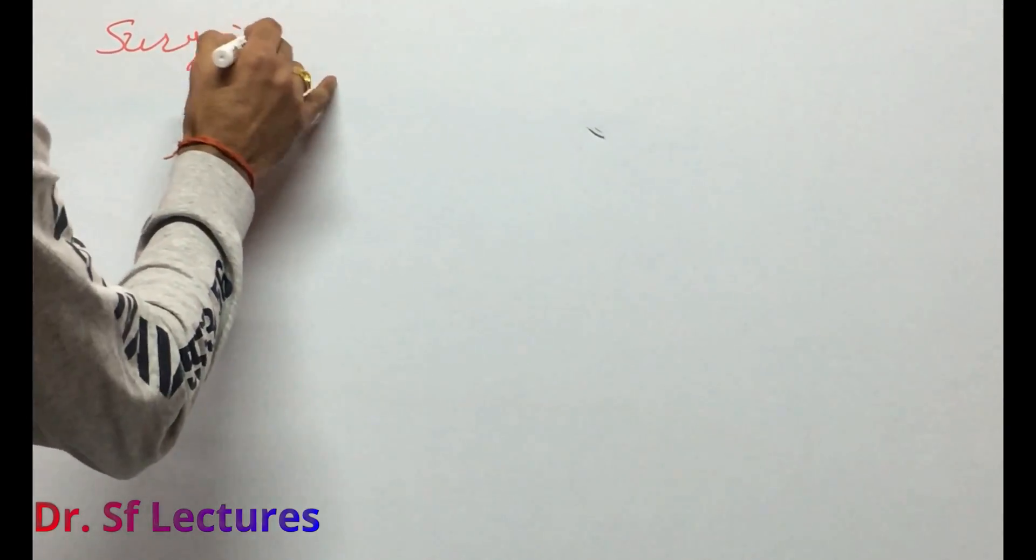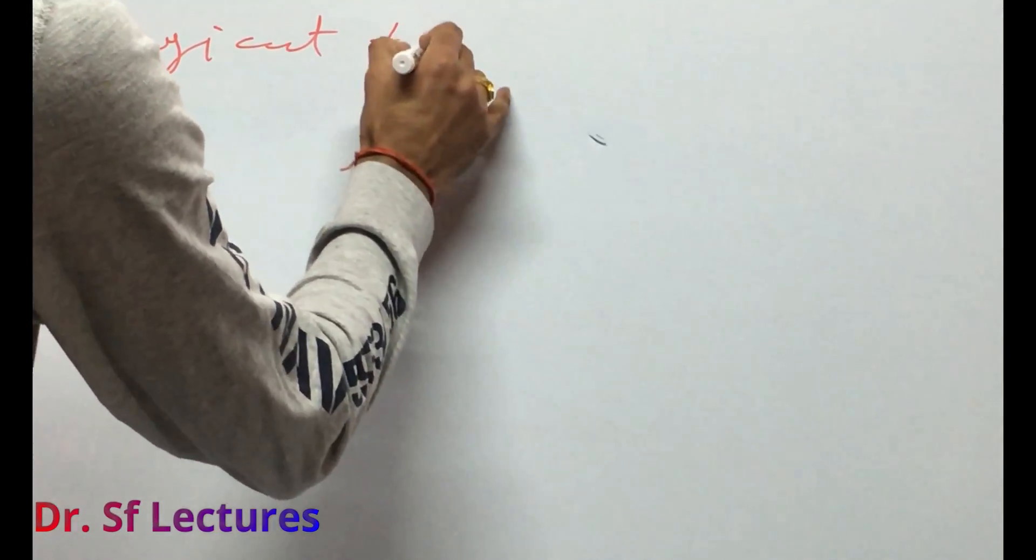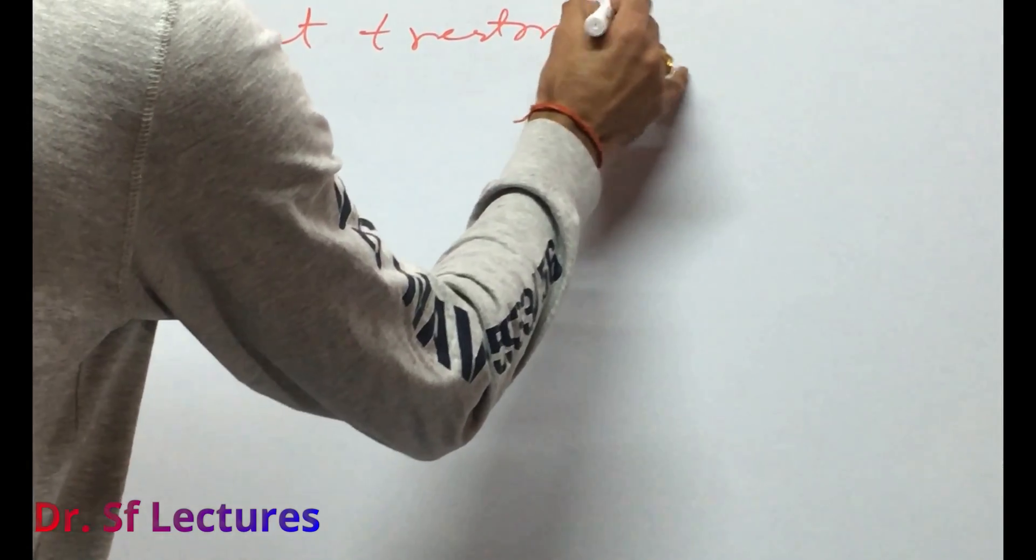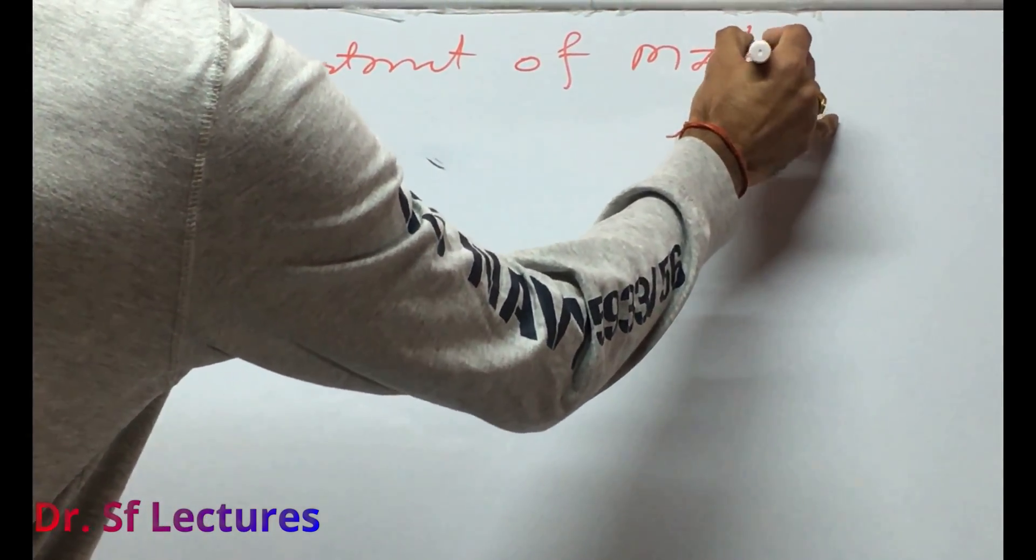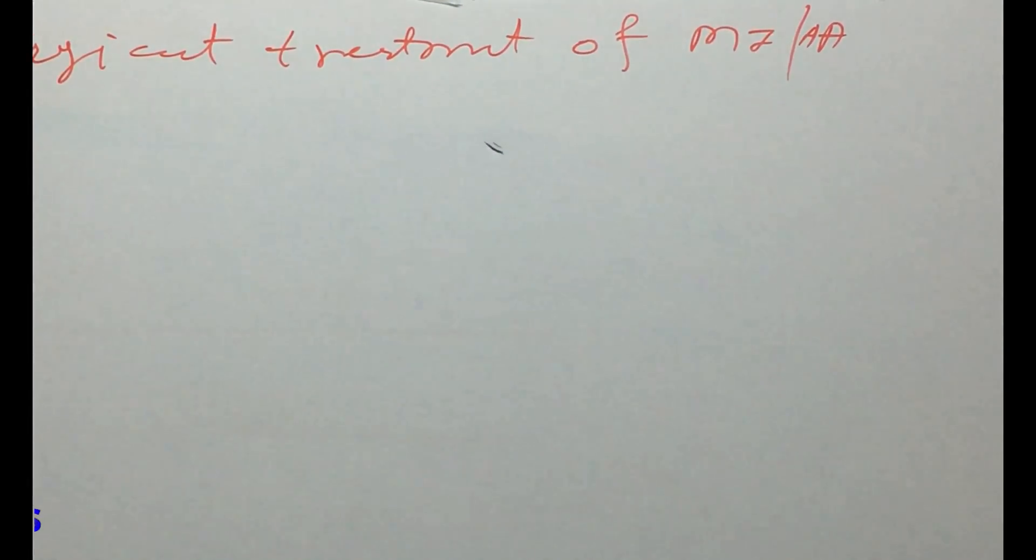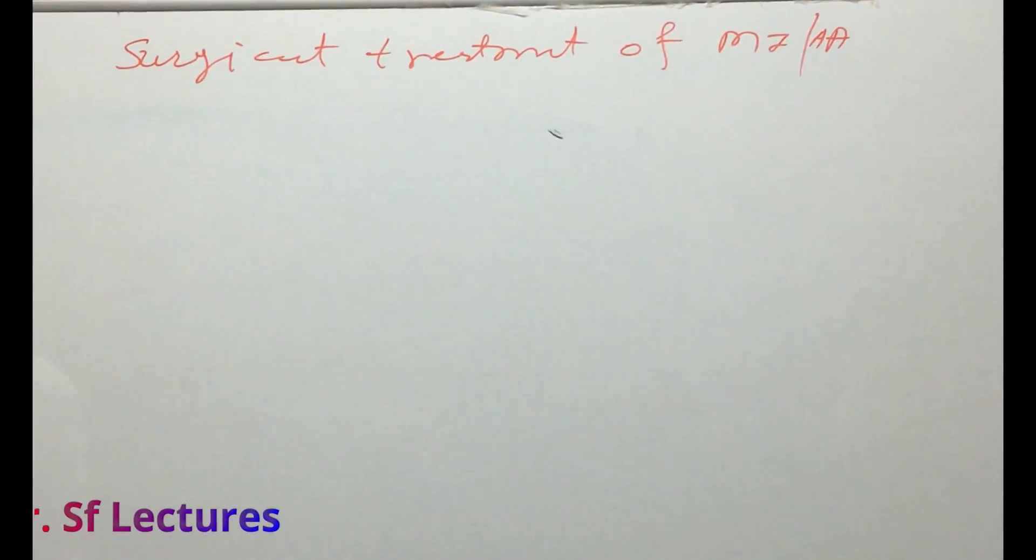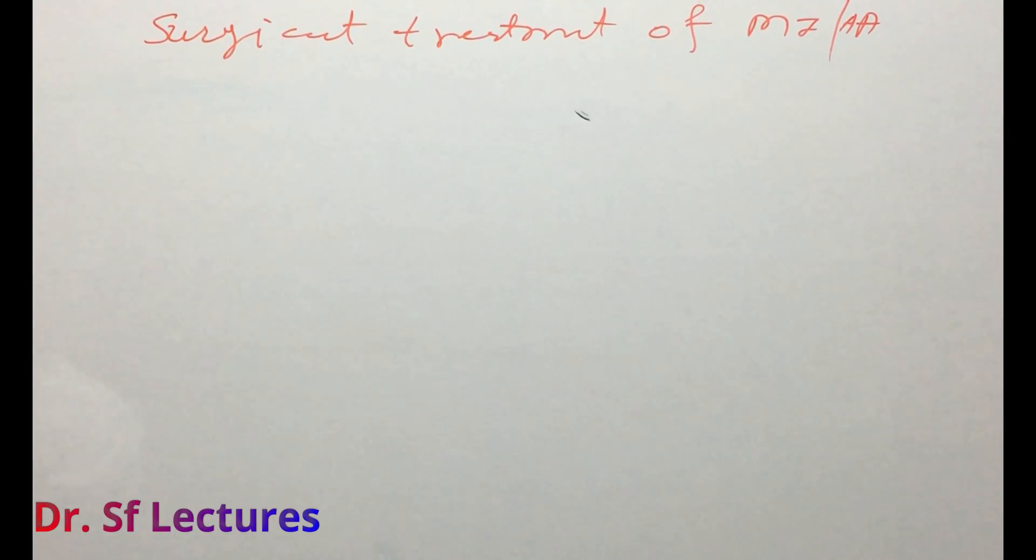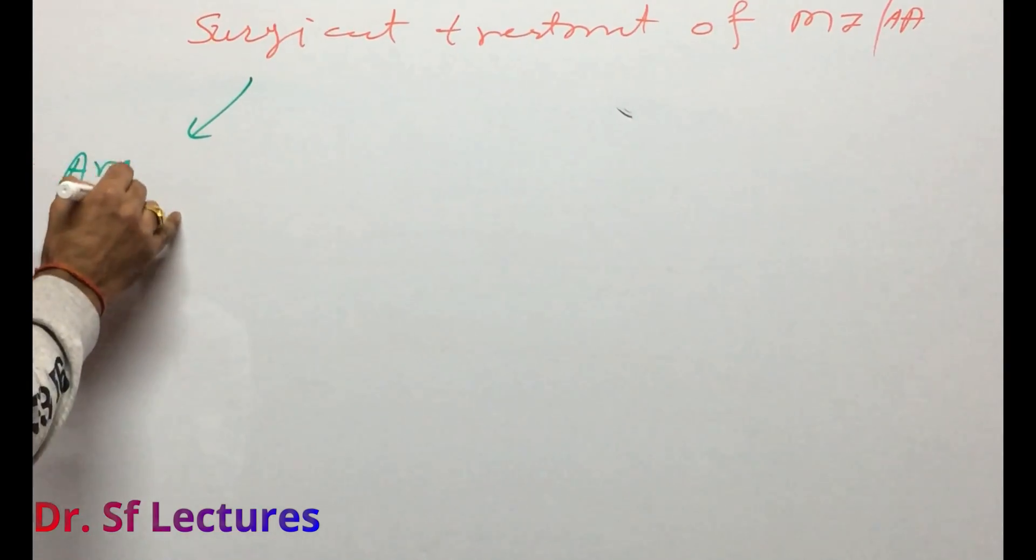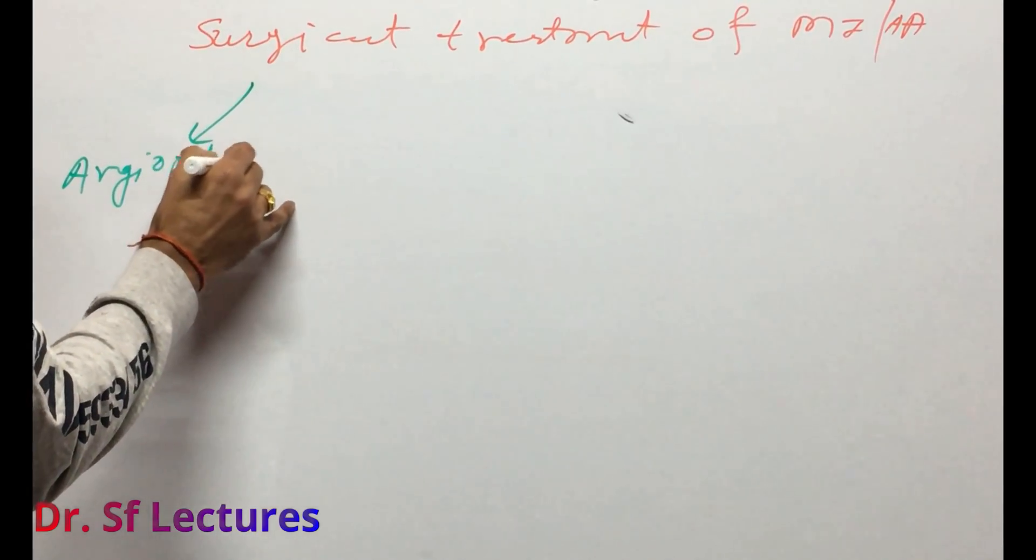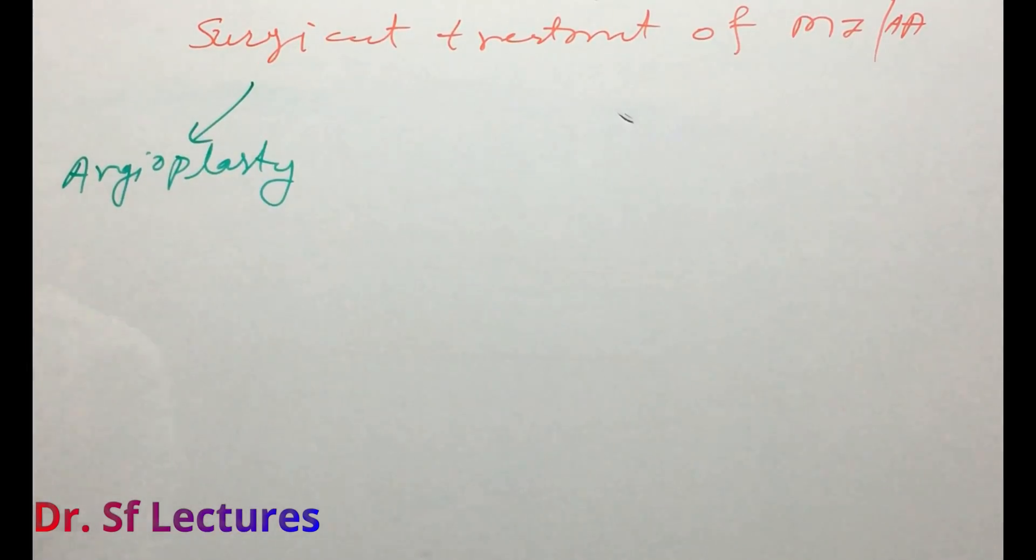Surgical treatment of myocardial infarction or heart attack. In surgical treatment, there are two types. First one is angioplasty, and second one is stent.